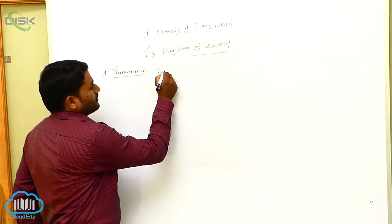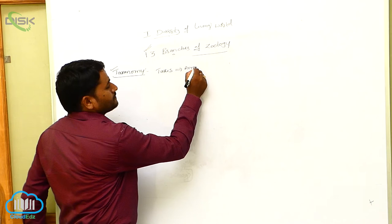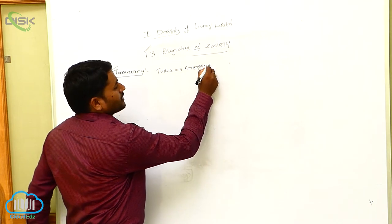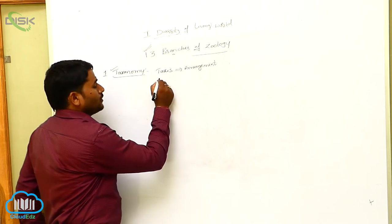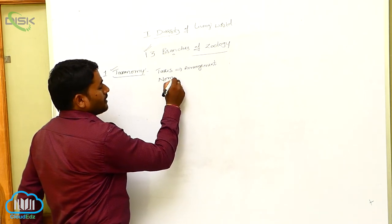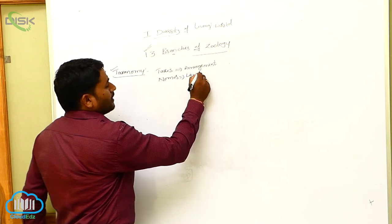The meaning of the taxonomy word is: taxis means arrangement. Taxis means what? Arrangement. Next one is nomos, which means law or custom.